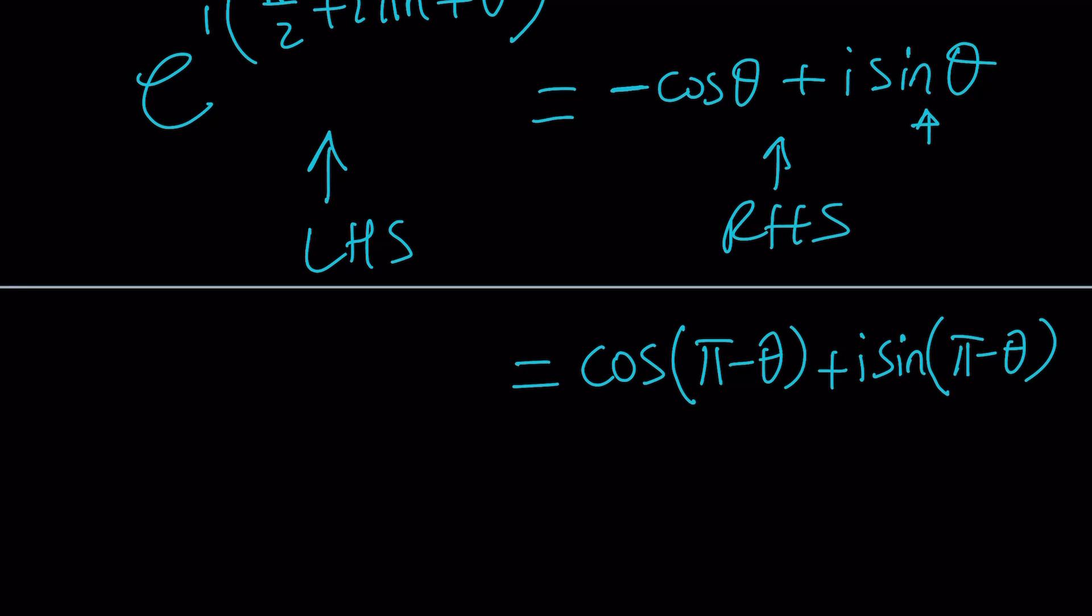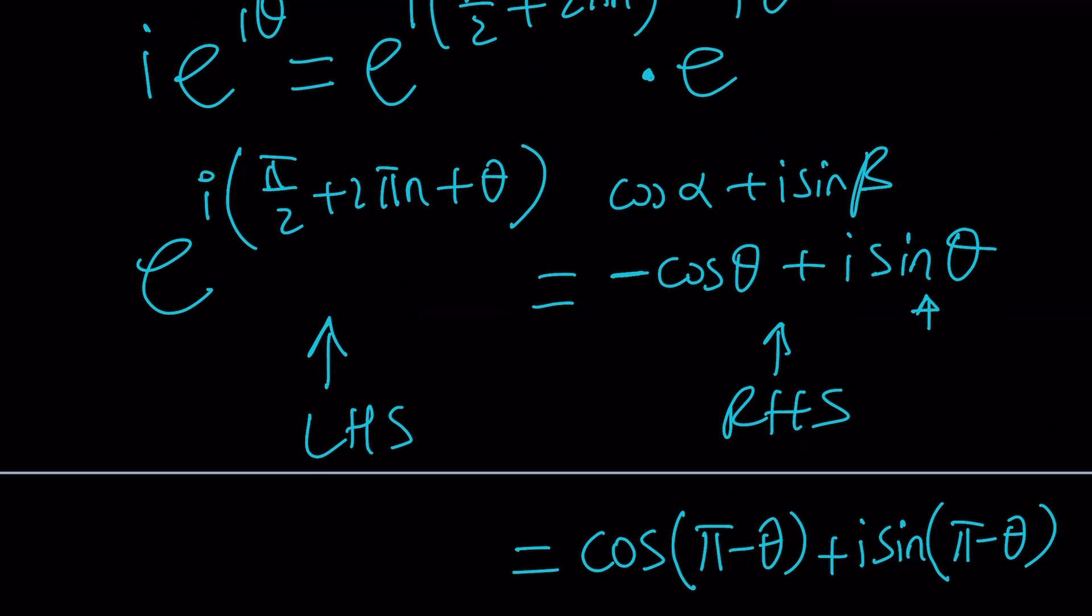You can't have like cosine alpha plus i sine beta, where alpha and beta are different. I mean, you can have it, but neither of these will be the argument. You kind of have to figure it out. And this will be another interesting problem where you have to figure it out, depending on the values of alpha and beta. Anyways, I'm overthinking this problem.